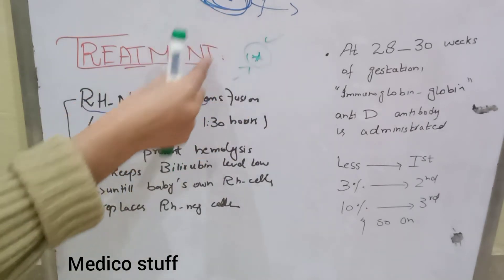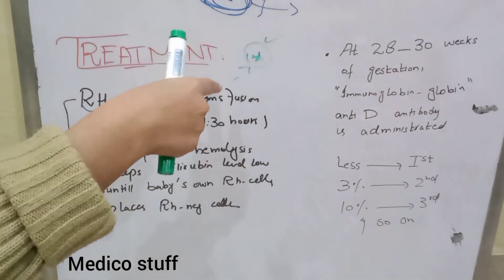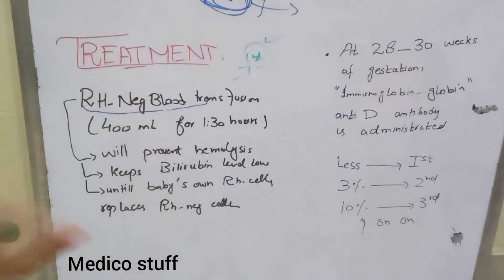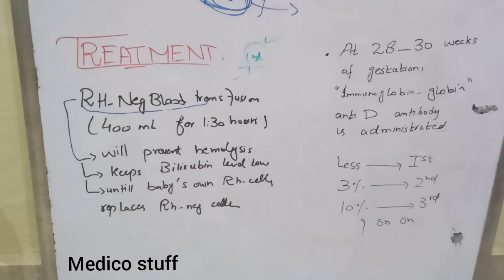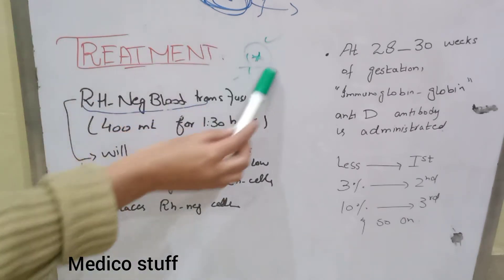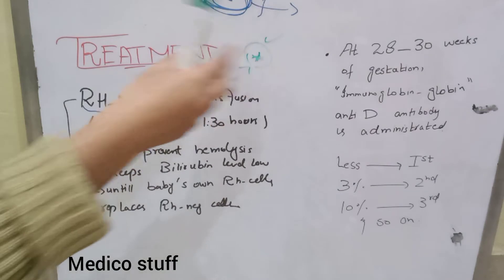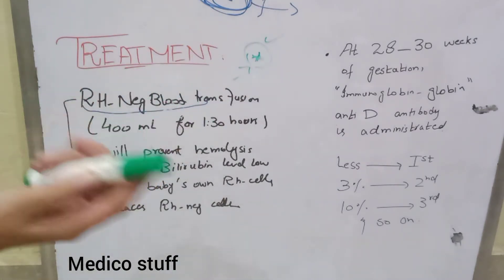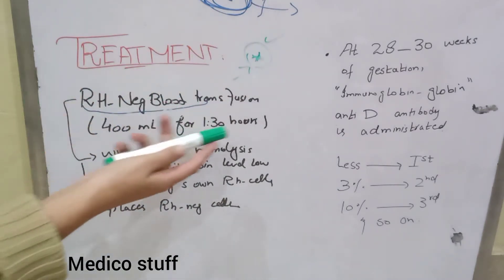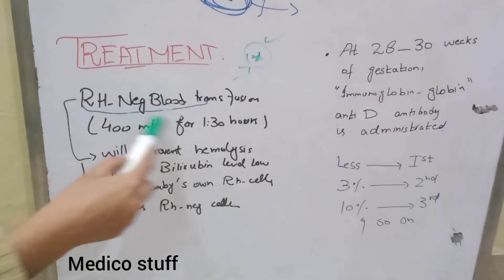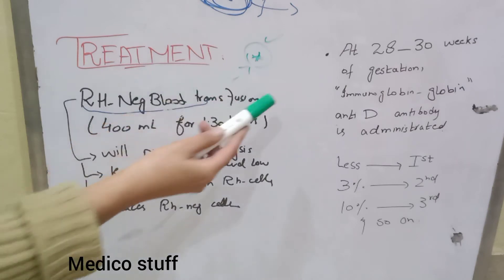If we transfuse RH positive blood, there will again be agglutination, lysis, and release of a large amount of bilirubin, which can lead to kernicterus. To avoid this, we transfuse RH negative blood — about 400 ml daily for 1 hour and 30 minutes. This will prevent hemolysis because the transfused blood contains no RH antigen.